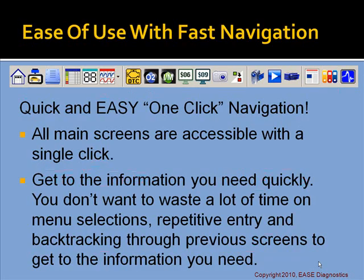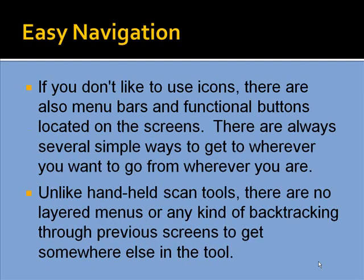The next power feature is ease of use with fast navigation. The eScan Tool has quick and easy one-click navigation — simply go across the toolbar at the top and it quickly takes you to the desired items. All main screens are accessible with a single click. You don't want to waste time on menu selections, repetitive entry, and backtracking. For example, click 'DTC' to see DTCs, click '$06' for mode 6, click 'graph' for graphing. If you don't like icons, there are also menu bars and function buttons. Unlike handheld tools, there are no layered menus or backtracking through previous screens.